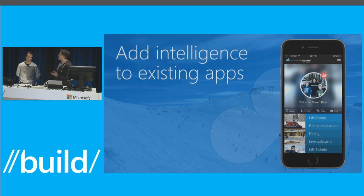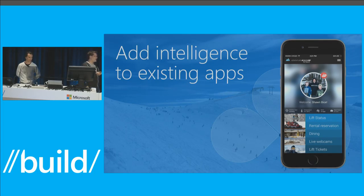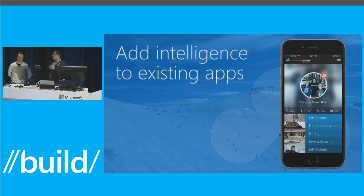When we sat with the team asking what would be a fun way to demonstrate adding intelligence to an app, we started with about 50 ideas and ended up on the ski app — the two of us ski so we could relate to it. This app is pretty straightforward; most resorts have something like it. You can look up lift status, check snow conditions, look at dining options. We'll walk through three scenarios with a before and after — a standard app, then with intelligence added.